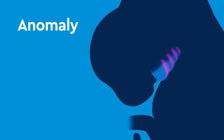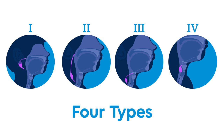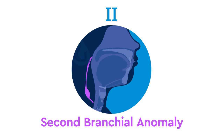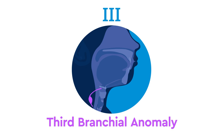There are four types of brachial cleft anomalies, but the most common types are second and third. Second brachial anomalies generally reach up toward the tonsils. Third brachial anomalies generally have an external opening in the lower neck and an internal opening in the back of your child's voice box. They most often look like a pit in the skin.